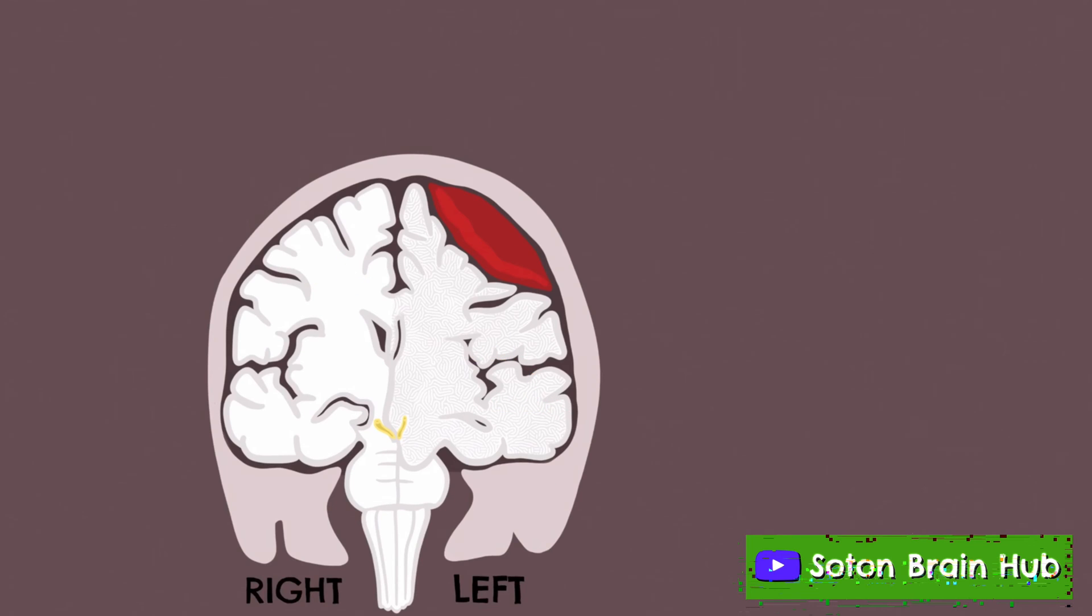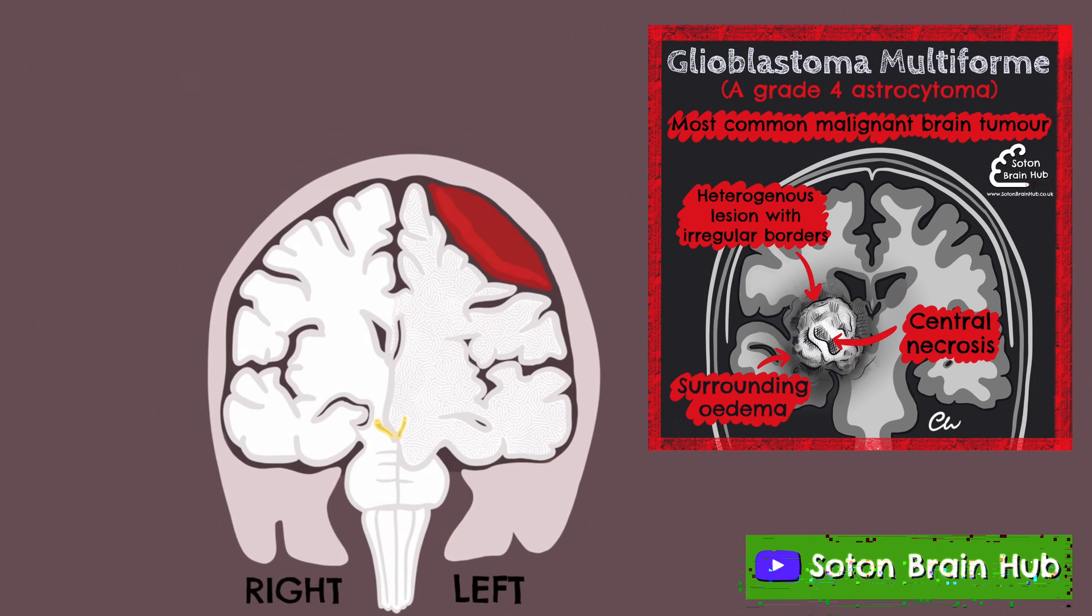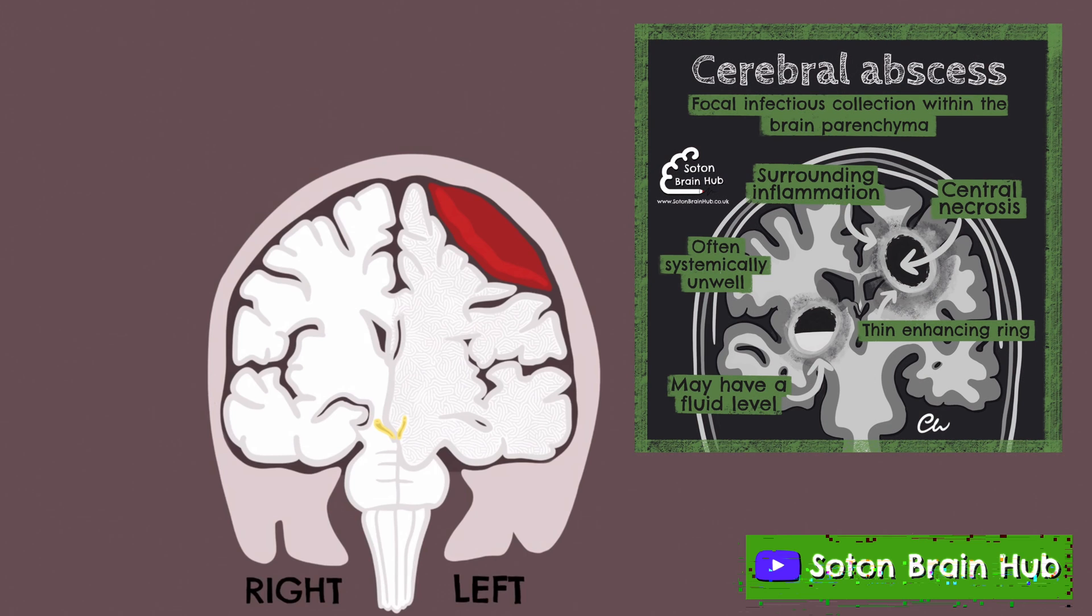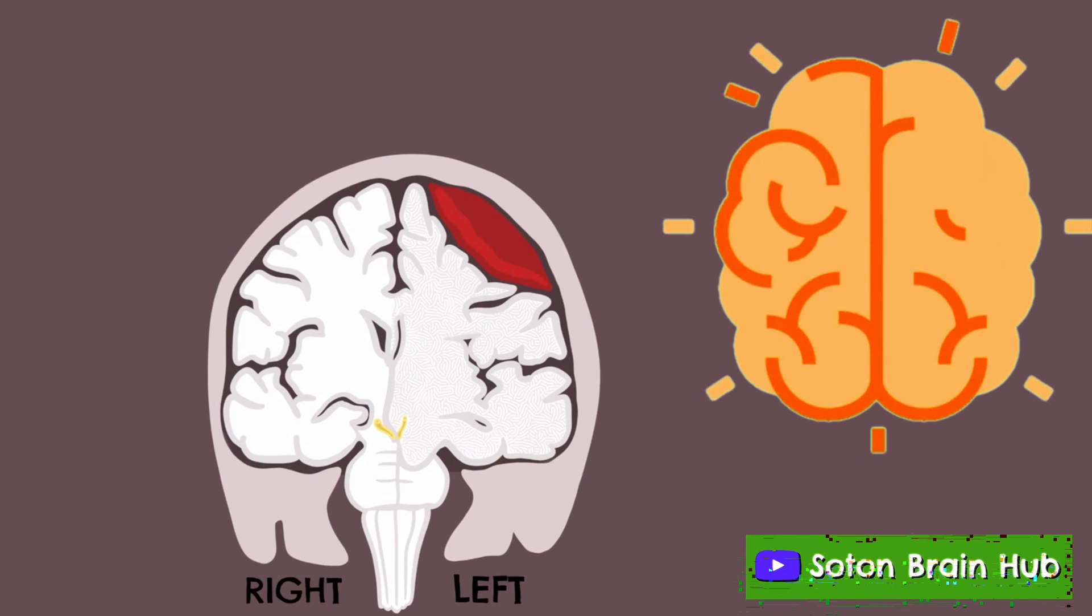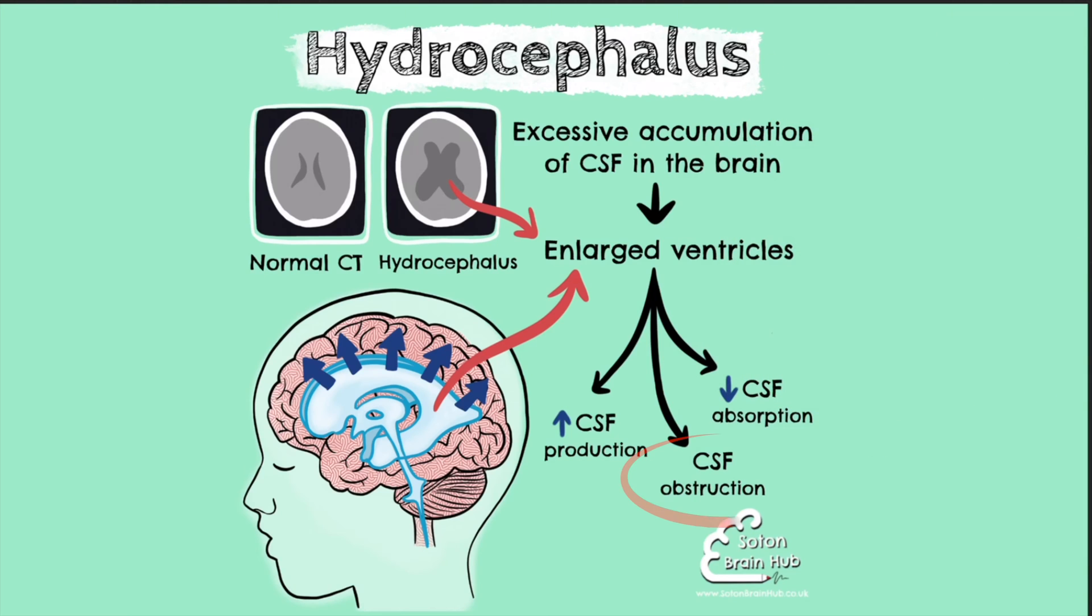Conditions such as expanding mass lesions, for example brain tumors or abscesses, can also increase the chance of uncal herniation occurring. Individuals with a history of ischemic strokes and obstructive hydrocephalus are also at an elevated risk.